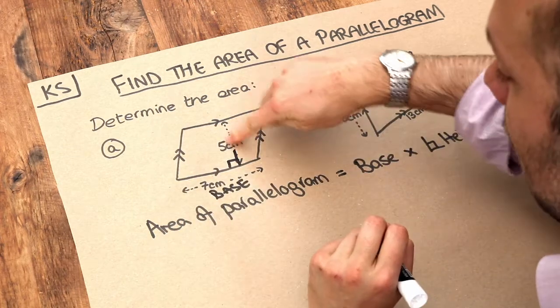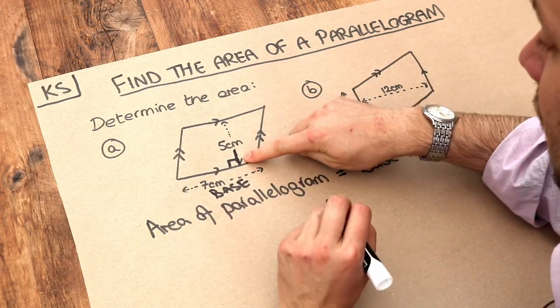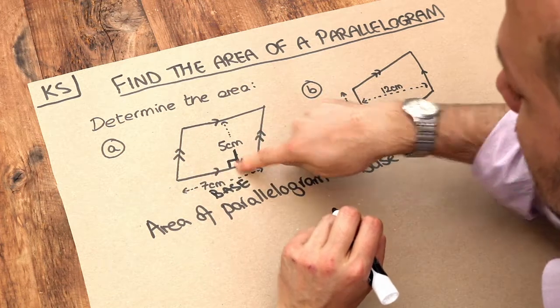then the height has to be perpendicular to that. Can you see, look, that height here is indeed perpendicular to the base, because that is a right angle there.